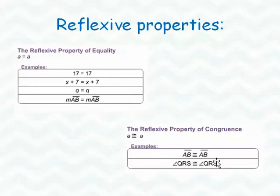Let's take a look at the reflexive property. The reflexive property of equality basically says that A is equal to A. So the examples would be 17 is equal to 17. X plus 7 is equal to X plus 7. Q is equal to Q. The measure of line segment AB is equal to the measure of line segment AB. Something is always equal to itself. The reflexive property of congruence is the same thing, but instead of using the equal sign like we did here, we're now going to use the congruence sign. So congruence is just basically the equal sign with a tilde above it.